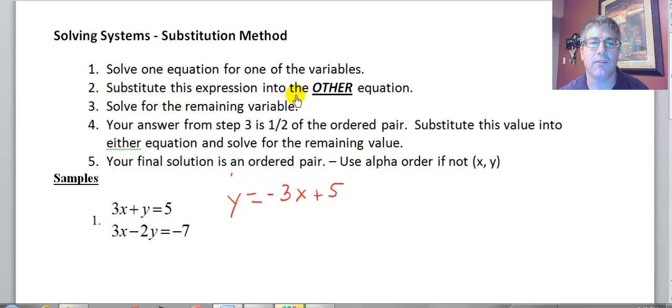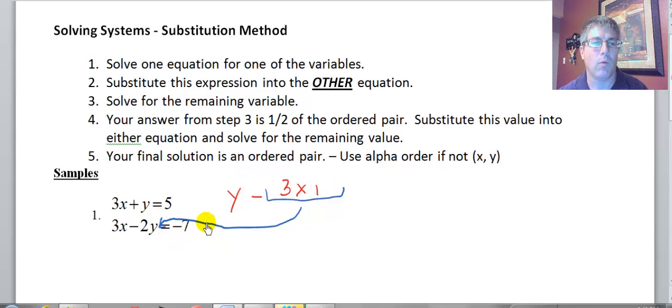And our instructions say to substitute this expression into the other equation. So we'll take negative 3X plus 5, and we're going to substitute it right in there for Y. So what we have now is 3X minus 2 times negative 3X plus 5 equals negative 7.